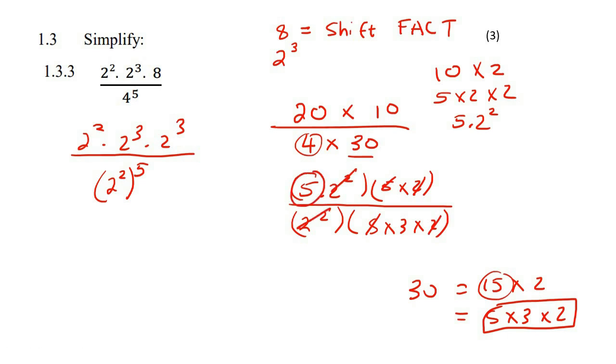And you're literally just left with a five at the top and a three at the bottom. So that is what we are doing here as well. We are breaking numbers down into their prime numbers, because then it becomes easier to simplify and to cancel.